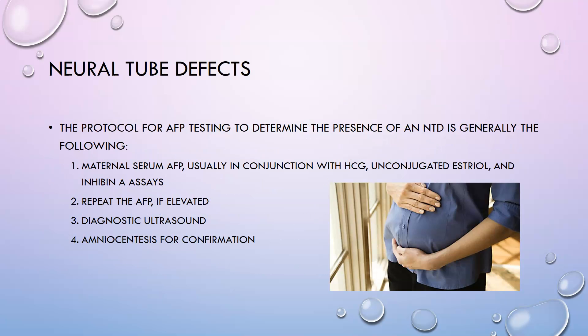The protocol for AFP testing to determine the presence of a neural tube defect is generally as follows: perform maternal serum alpha-fetoprotein, usually in conjunction with HCG, unconjugated estriol, and inhibin A assays. If AFP comes back elevated, repeat the AFP. Then perform a detailed diagnostic ultrasound. And lastly, you can do an amniocentesis for confirmation.